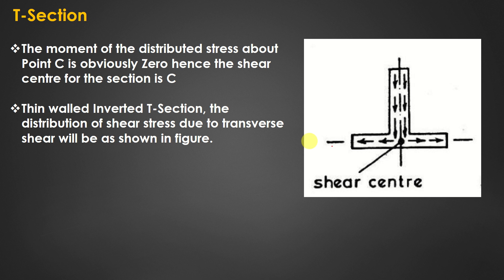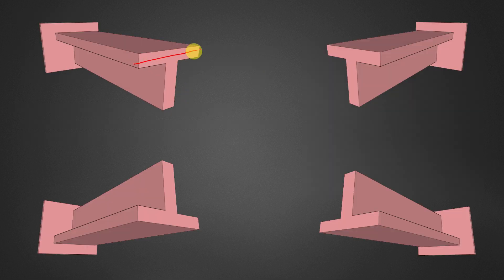Now let us see the T section. For an inverted T section, the shear center is also located at the intersection of the forces, because the moment of distributed stress about this point is zero. The shear center for the T section is point C, located at the intersection. You can see different types of T sections here, and for all of them the shear center is located at this intersection point.